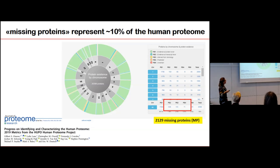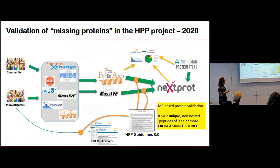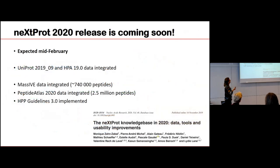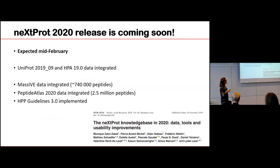This year we are doing the same but with two changes. First, we will take not only PeptideAtlas data but also data re-analyzed by the MassIVE pipeline, and validate a protein if two peptides come from either PeptideAtlas or MassIVE — a slight modification of the guidelines published this year. In the next release, expected in about one month, you will have both MassIVE and PeptideAtlas data integrated, so the number of peptides will be nearly double what is already in nextProt. We also updated nextProt with new UniProt and new HPA data.